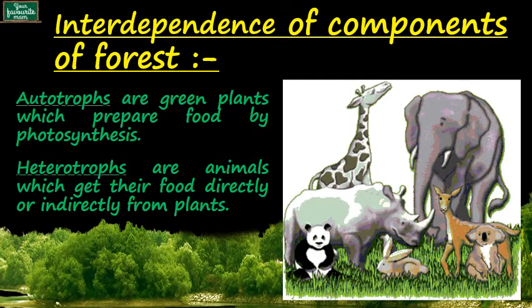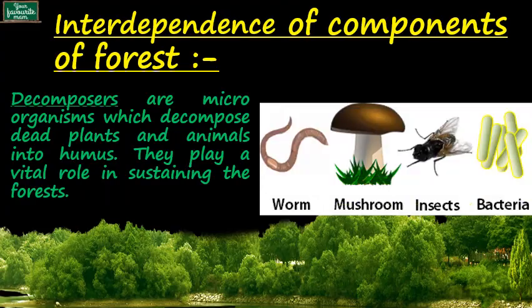The second are heterotrophs. Heterotrophs are the animals which get their food directly or indirectly from plants. All animals are called heterotrophs specifically because they depend on other organisms for food, and hence they are also called consumers. The next are decomposers — mostly these organisms are microorganisms like bacteria, fungi, and also worms and insects. They feed on dead plants and animals and thus are also called saprotrophs.